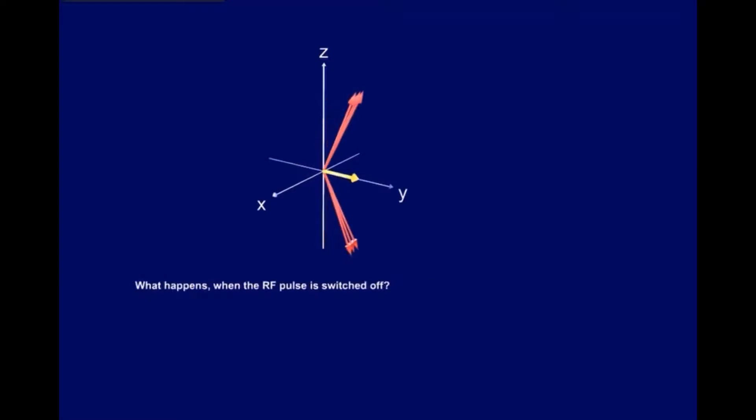What happens when the RF pulse is switched off? To find out, try clicking it off. Two things happen. Protons go back to their lower state of energy, and they lose phase coherence. It's important to note that both processes occur simultaneously and independently.